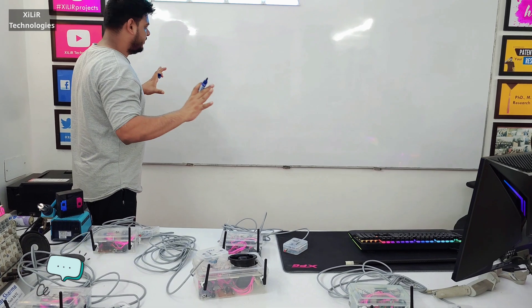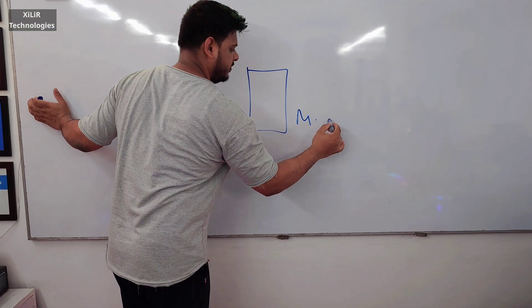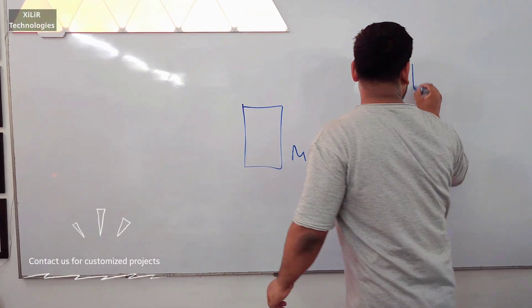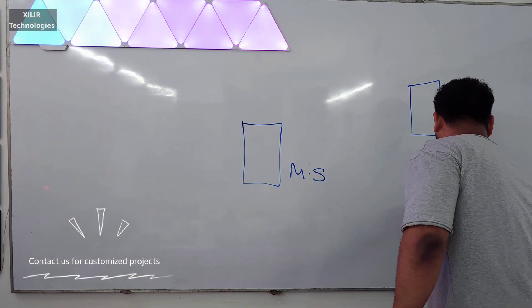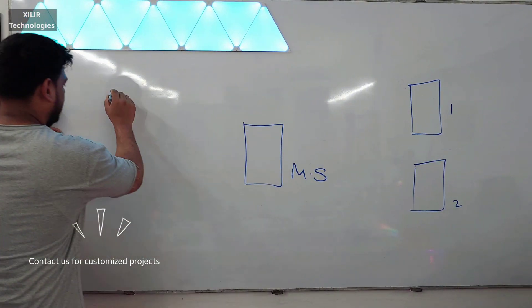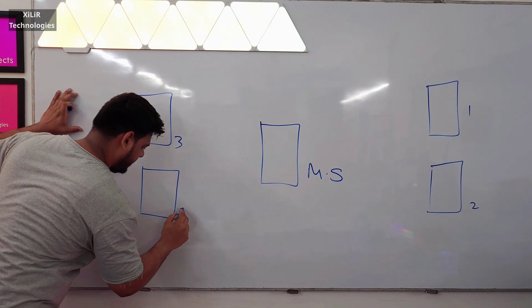I will show you in the block diagram form first. So this is the main station, and these are some substations: 1, 2, then 3, then 4.